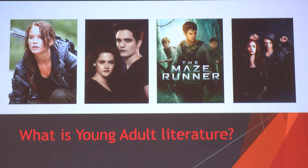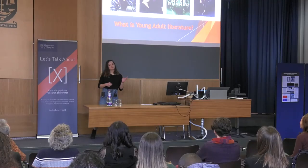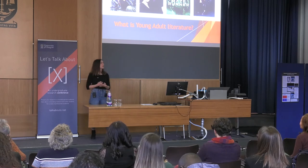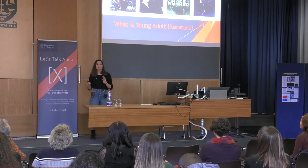So first of all, what is adolescent literature? Some people call it young adult literature or YA — I'll be saying YA from now on because that's easier. We all know the Hunger Games, Twilight, maybe the Maze Runner or the Mortal Instruments. All of these are examples of YA film adaptations of very popular books. YA is a genre that bridges the gap from children's literature to adult literature and it's aimed at an audience of usually 13 to 18 year olds.